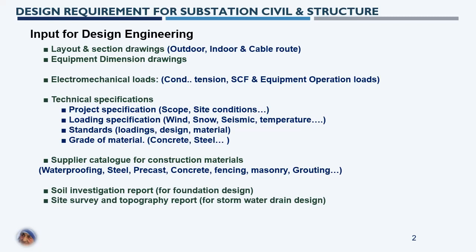The outdoor layout and sections provide detailed information about what structures and equipment are required for the substation system. They also provide various civil and structural engineering activity requirements, dimensions of various structures, how tall the gantry tower should be, the fixing height of line conductors, bay distance, types of equipment, access to equipment, control room building location, and other parameters required for civil and structural engineering design.